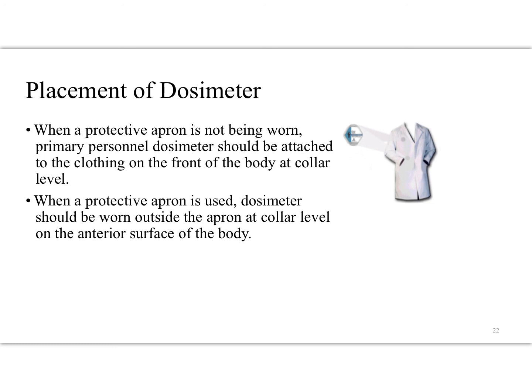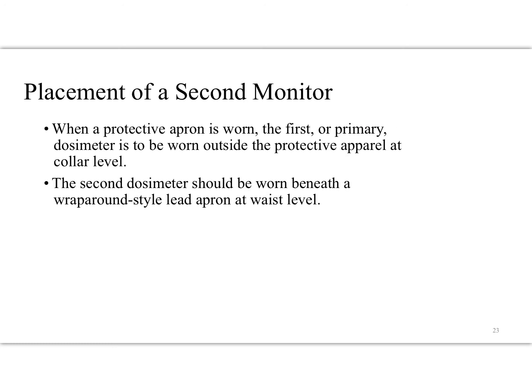OSL badges should be worn at the collar level outside of the lead apron. In the event that a technologist declares pregnancy, they'll receive a second monitor. That monitor needs to be worn at the waist level beneath the lead apron — it basically simulates the dose received by the fetus. What we're saying is the fetus is at risk of receiving 10% or more of the annual occupational dose of 50 millisieverts — i.e., 5 millisieverts — so they need to be issued a monitor.